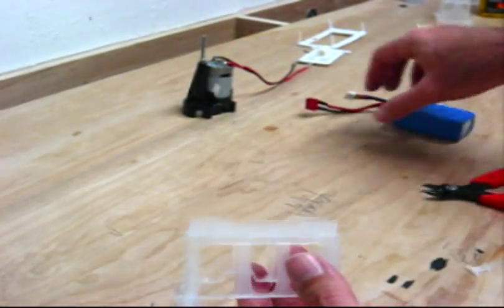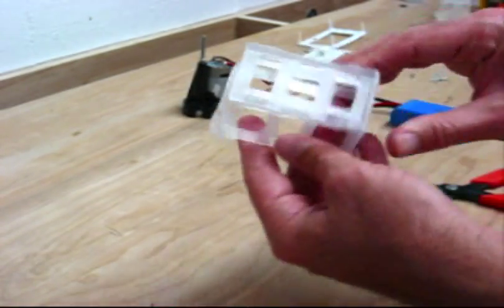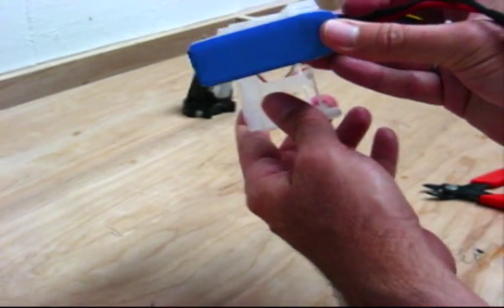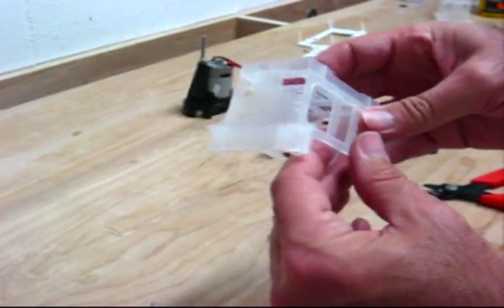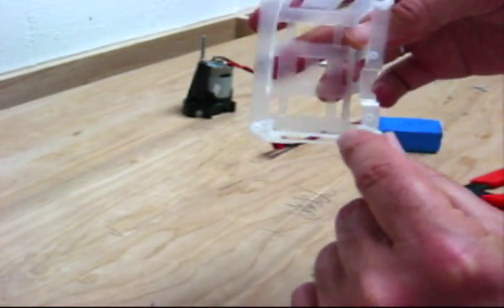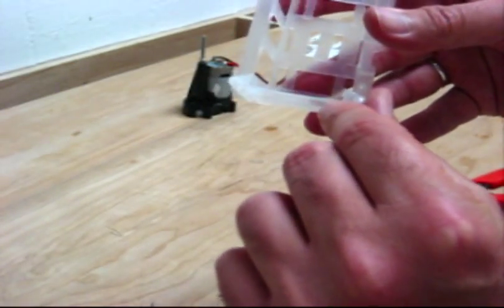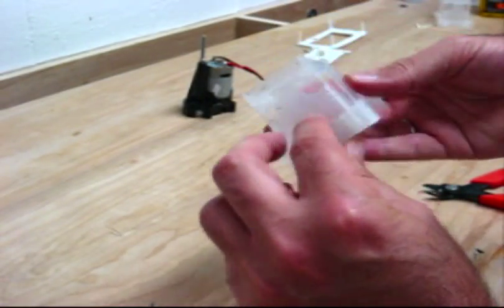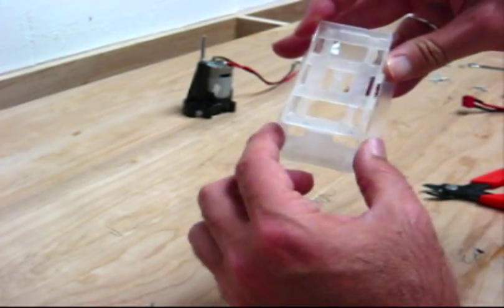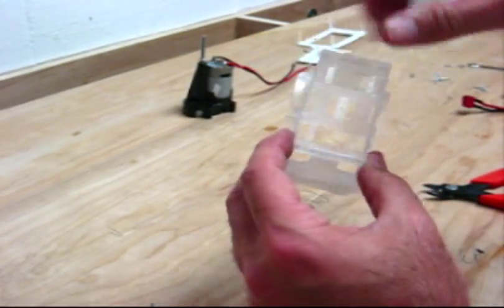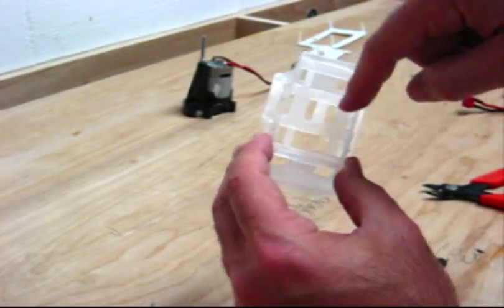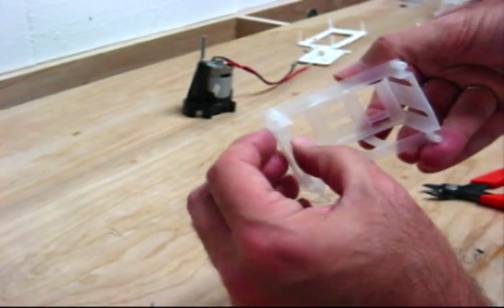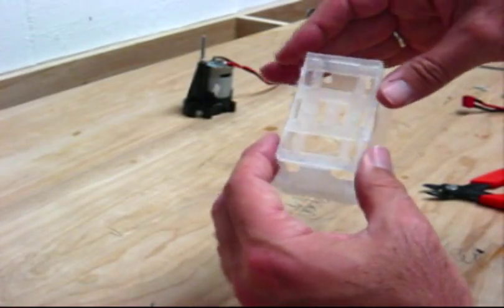Now the next thing you want to do is you want to cut some of this out on the top so the battery will fit through like this. But there's one thing you don't want to do: right here, if you can see it, this is the slot that the landing gear fits into. This whole piece of plastic all up through here is what supports the landing gear. And what I do is I cut everything out in here, but I keep everything in this particular area so I don't weaken the landing gear. It gives it all the strength it needs.